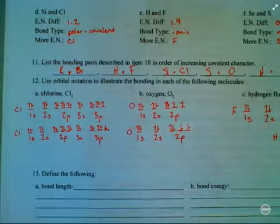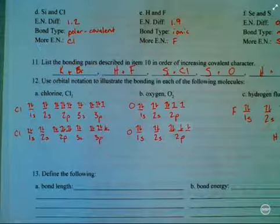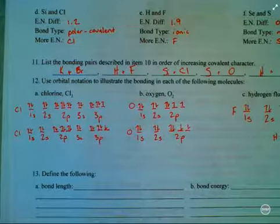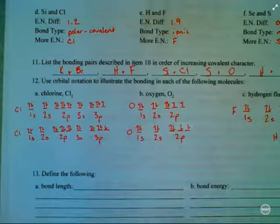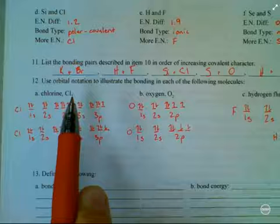Number 12, use orbital notation to illustrate the bonding in each of the following molecules. So, orbital notation. And so, what I've done here, let's start with A, looking at chlorine, a chlorine molecule.